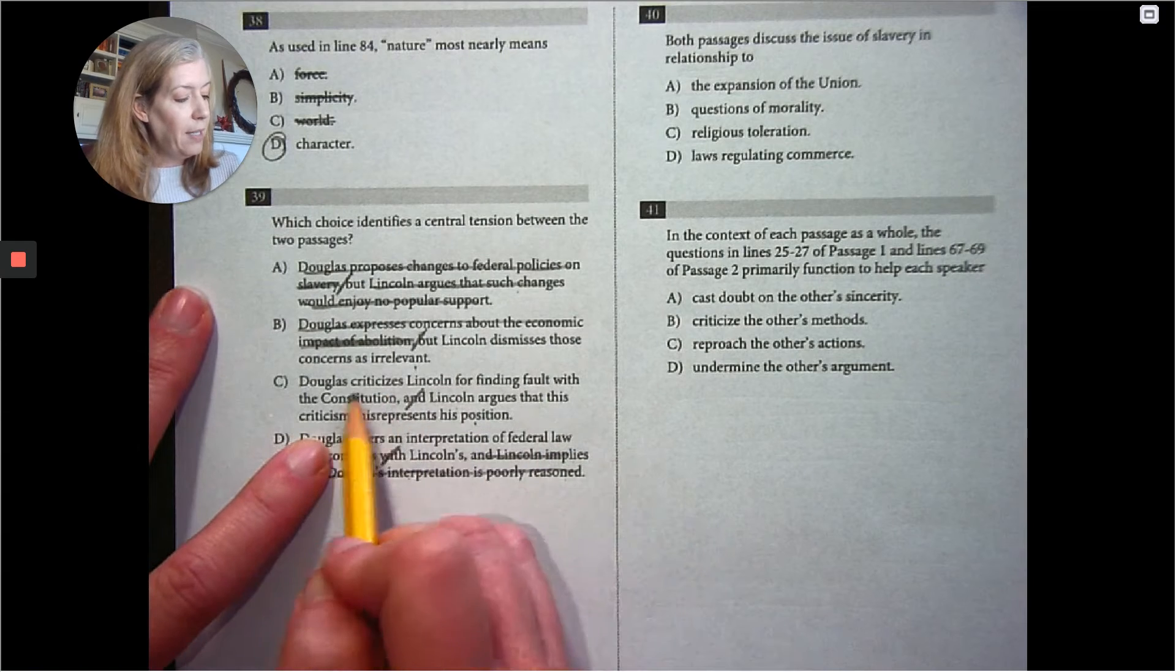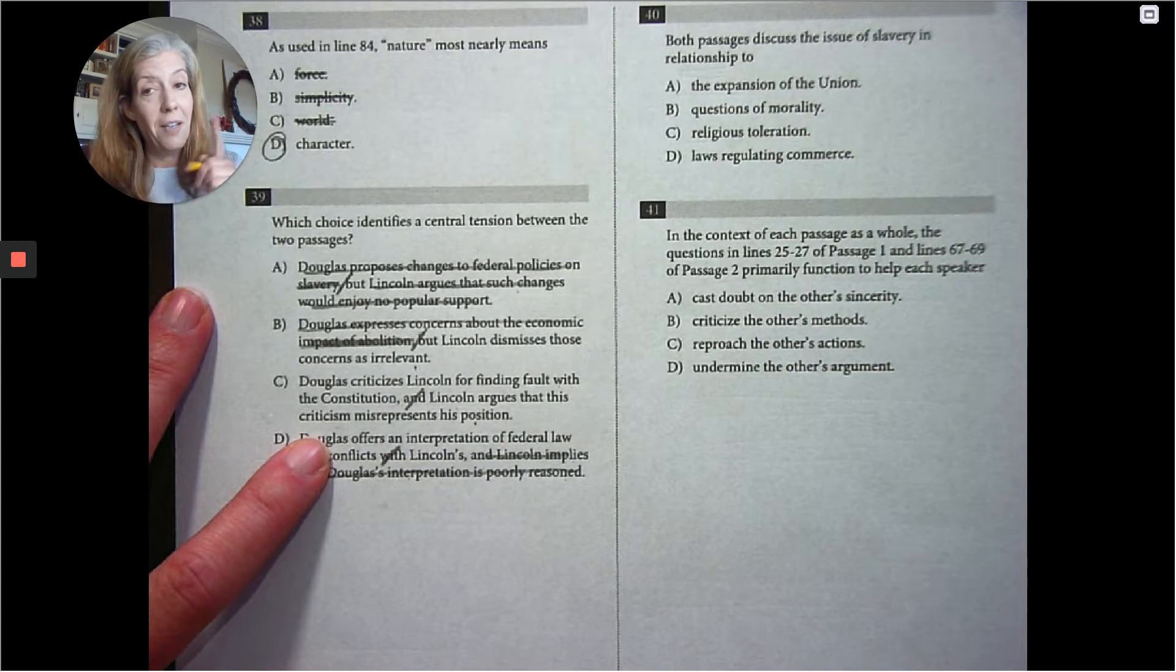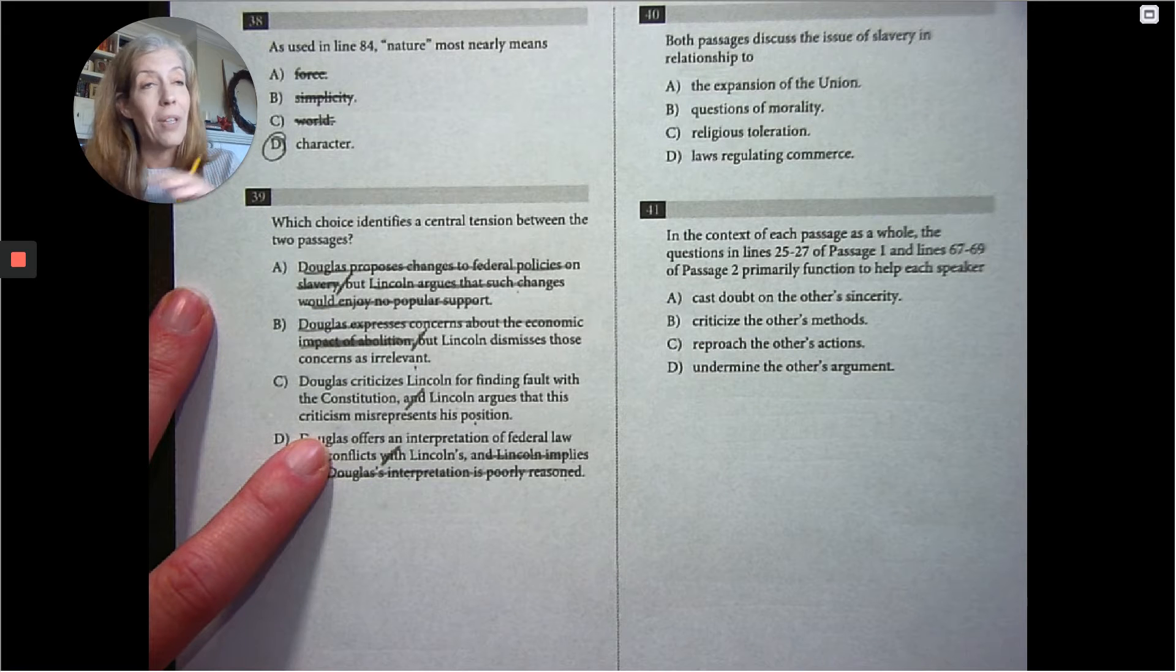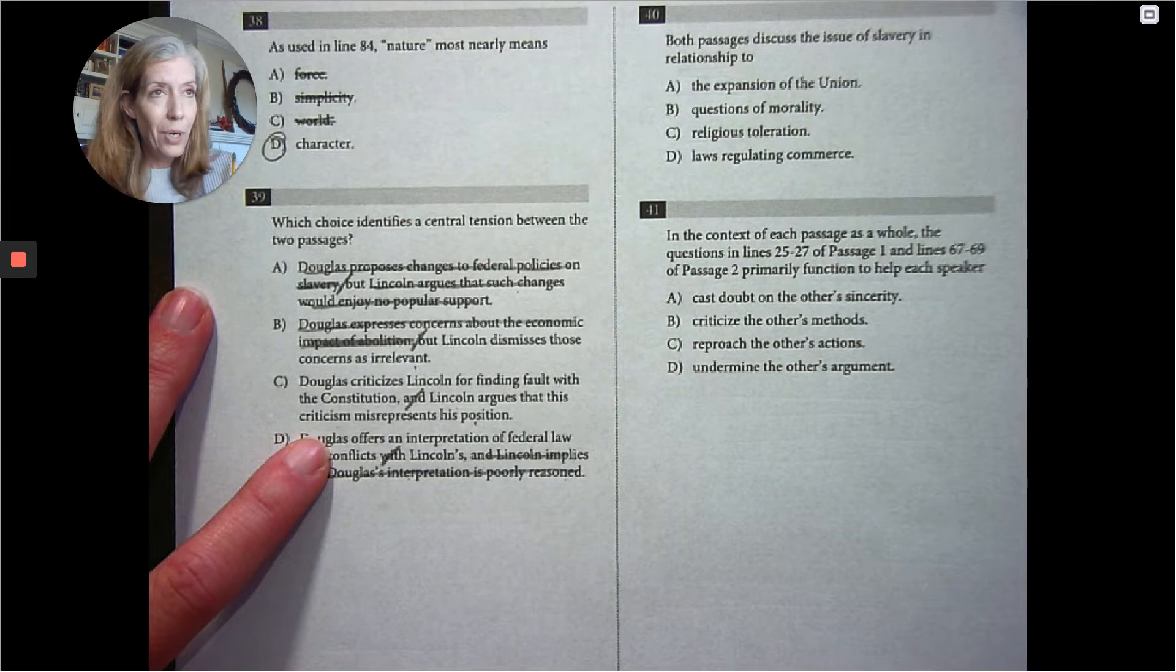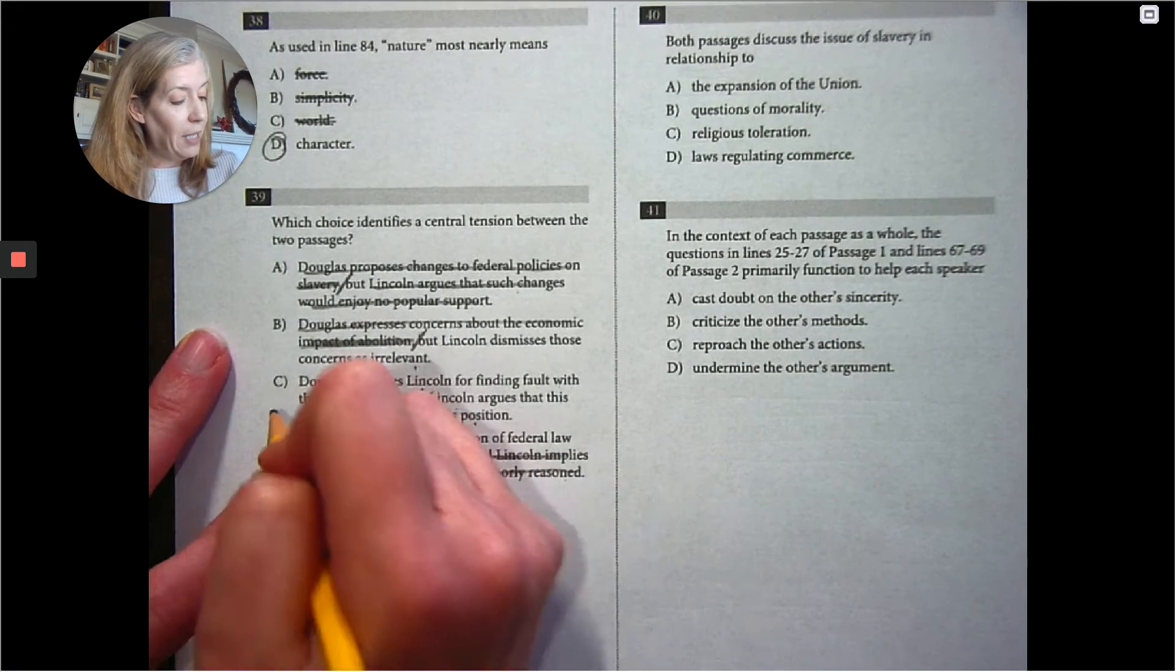Douglas criticizes Lincoln for finding fault with the constitution. That is true. He's saying the founding, Douglas is saying the founding fathers came up with a perfect template for us to follow. So I really like that. And we already got rid of D. So the answer is C.